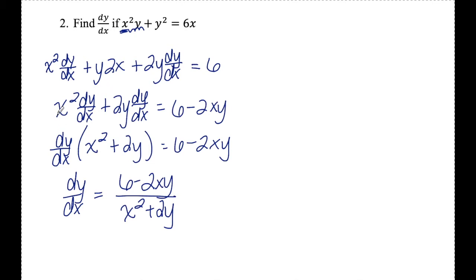A lot of times you'll see people skip from the step with all the dy/dx terms together to the final answer step. It's not completely necessary to factor out the dy/dx — if you can do this factoring and division in your head, it's completely fine to skip that middle step. I just like to show it in the first couple of examples so you know how I got there. Moving forward, I'll most likely skip this in-between step.